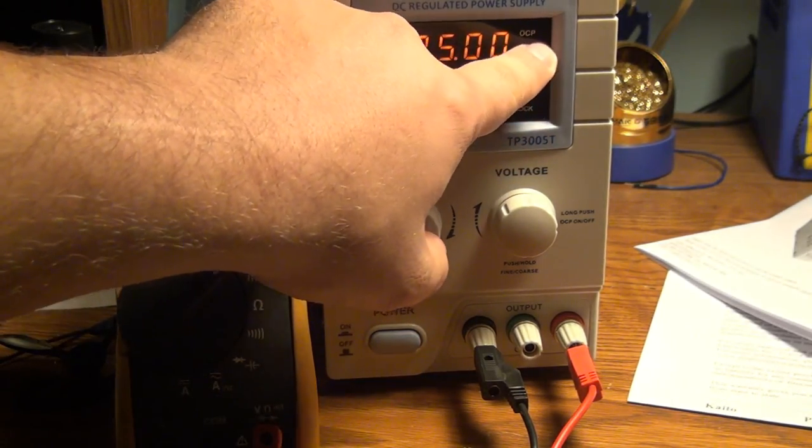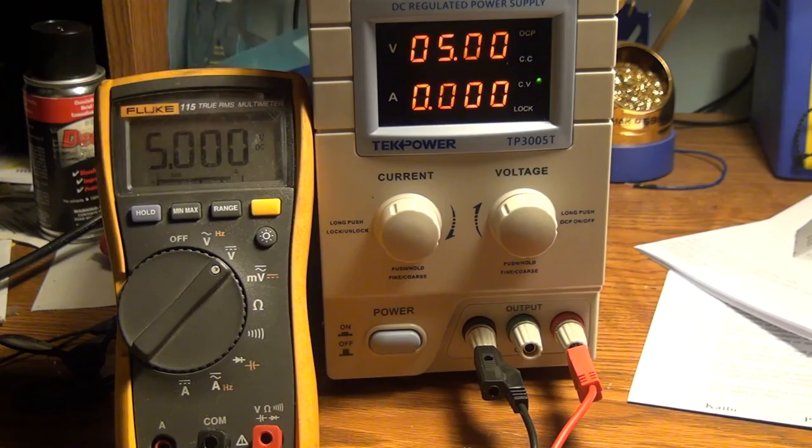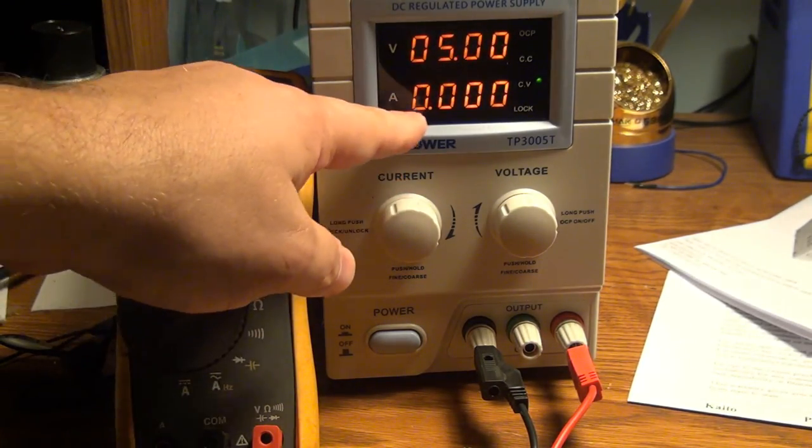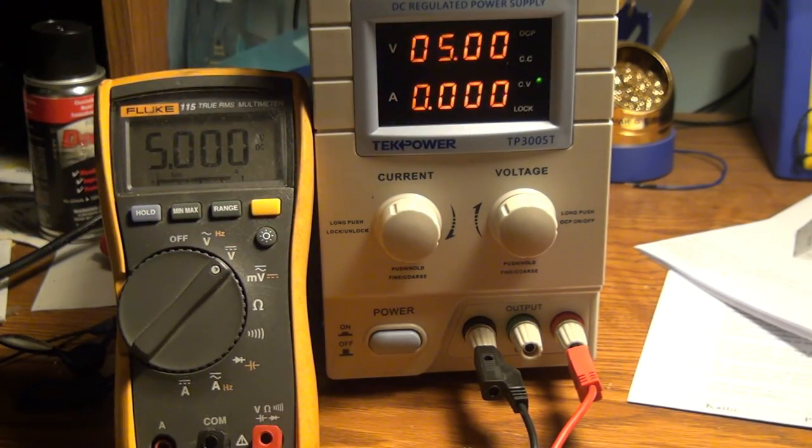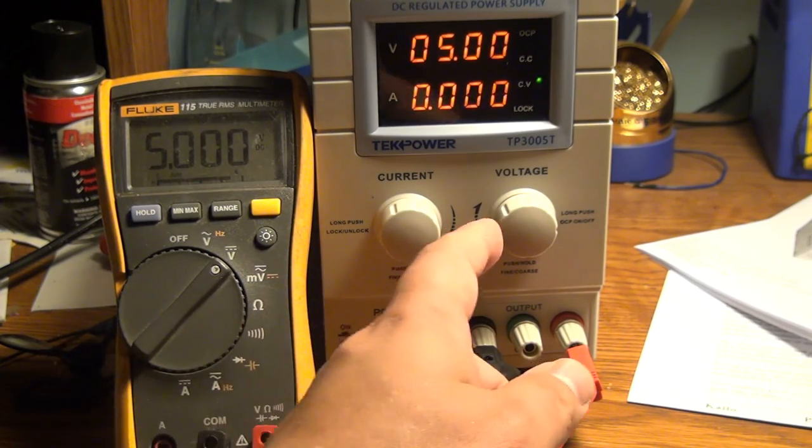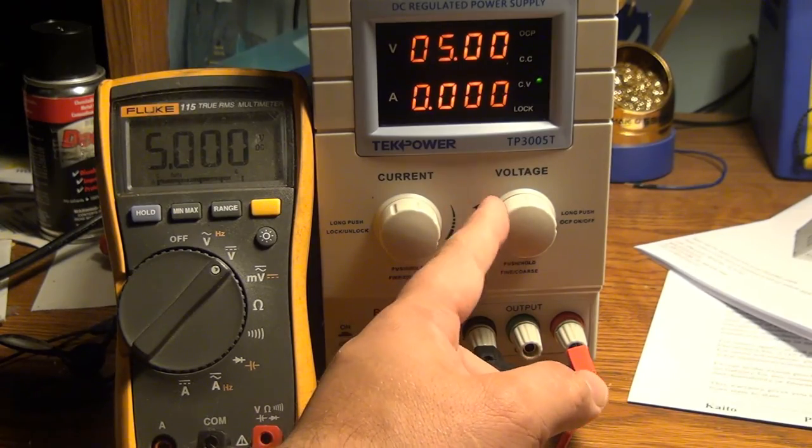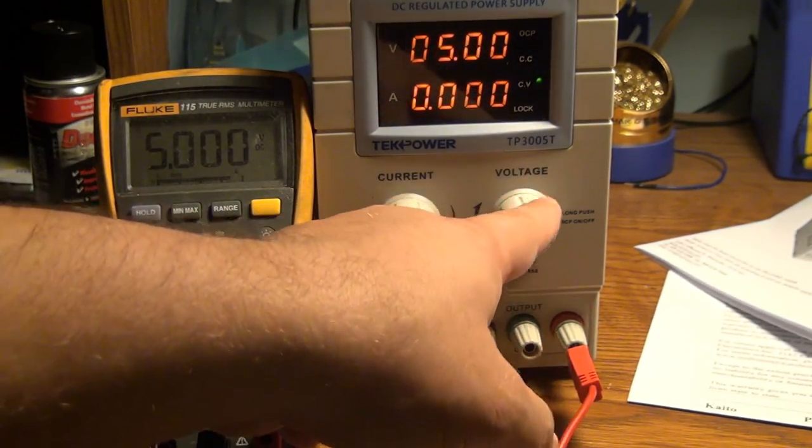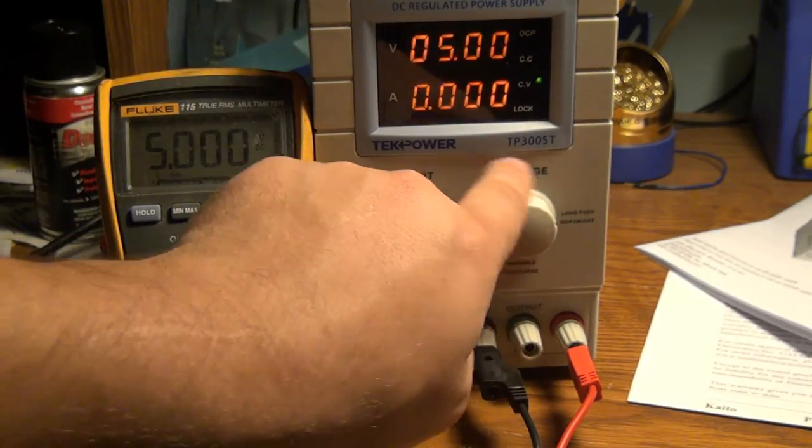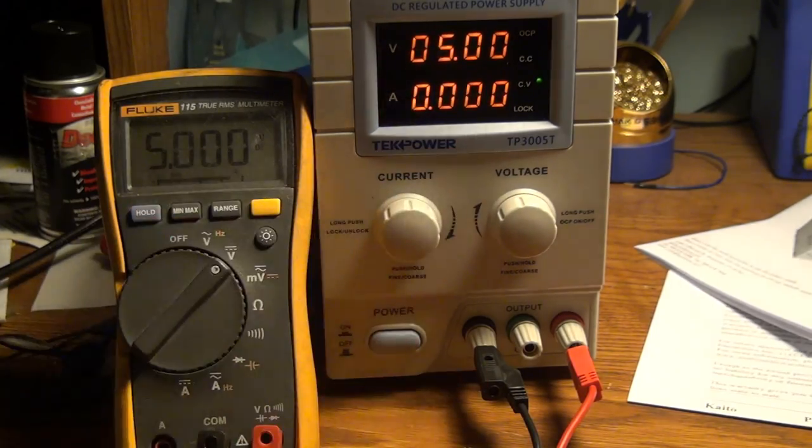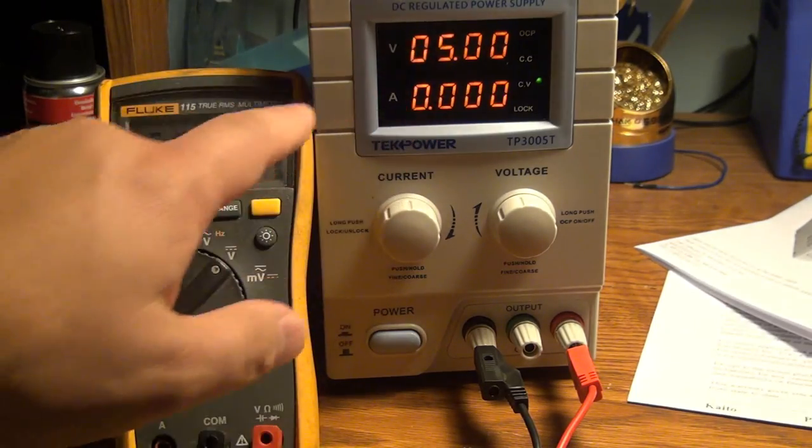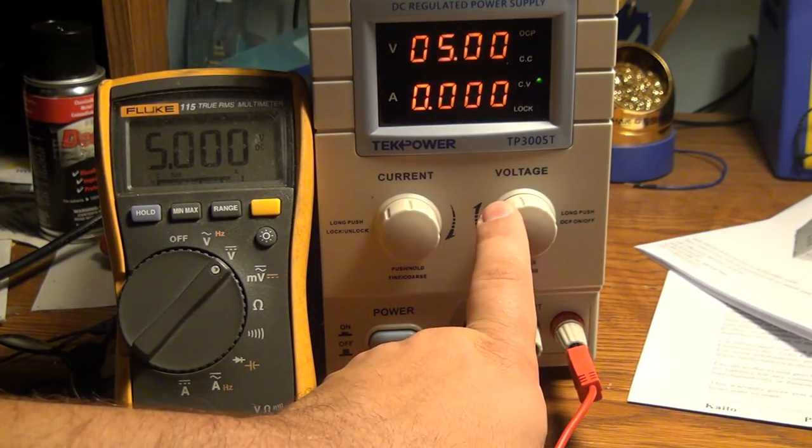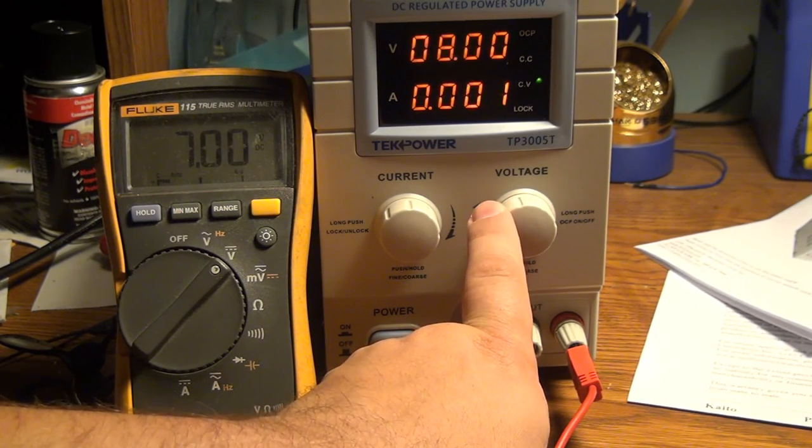I'm not a giant fan of the overcurrent protection style supply. The idea being is that if the current reaches the set threshold, the supply, instead of going into constant current mode, just shuts off its output. And we can play with that feature a little bit later. Something I'm more curious about is whether the supply is capable of bringing up a load slowly. How would you put the... When you don't push the button to go into setting mode, the knobs don't actually do anything. Which the supply is decently accurate here. But let's try. This is a live output, so you can.